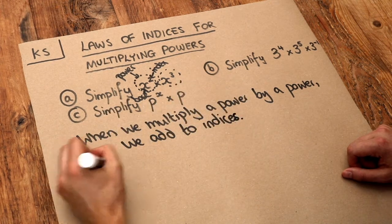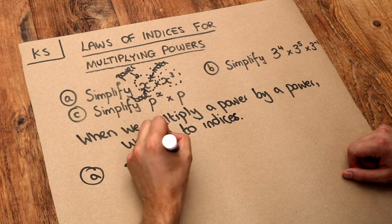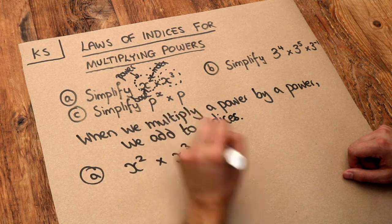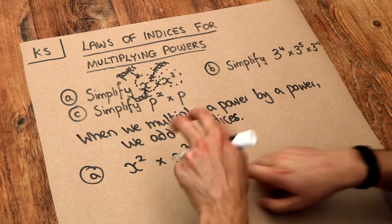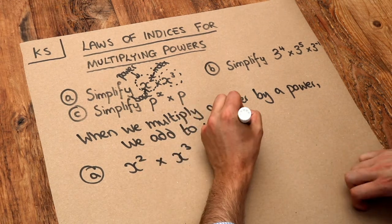For this first one, when we do x squared times x cubed, we're multiplying two powers, so we add these indices, the 2 and the 3. Two plus 3 is 5, so we end up with x to the power of 5.